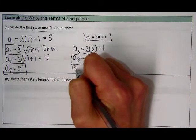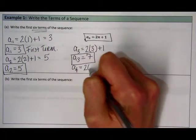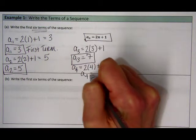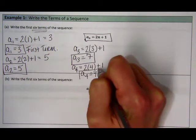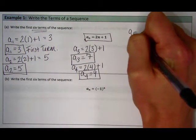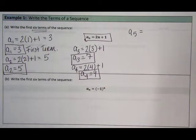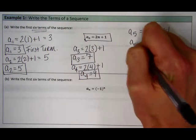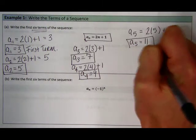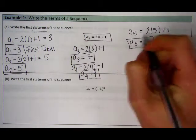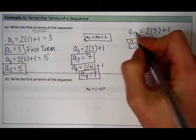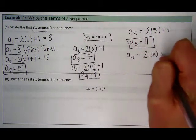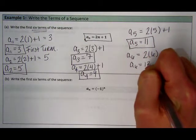My fourth term, I plug 4 into my equation, 2 times 4 plus 1. 8 plus 1 gives me my fourth term, equal to 9. A sub 5 is my fifth term, so if I plug that in, 2 times 5 plus 1 gives me my fifth term at 11. And my last, because I'm looking for my first six terms, my next term is going to be a sub 6. So 2 times 6 plus 1 gives me my sixth term is 13.